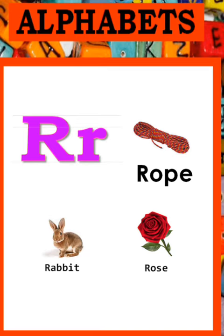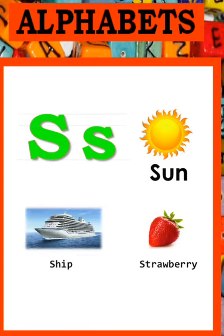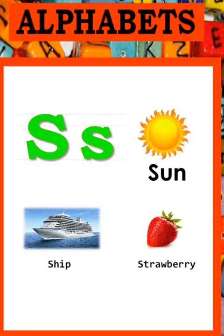R - Rabbit, Rose. S - Sun, Sea, Ship and Strawberry.